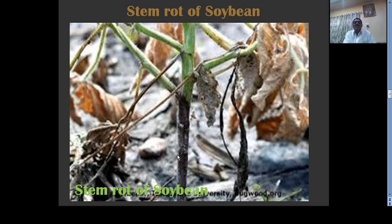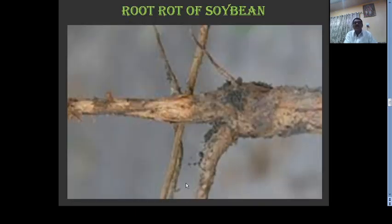This is stem rot of soybean due to the fungus Pythium. Stem rot is caused in the soybean plants, and the plant gets collapsed or toppled over on the ground. This is root rot of soybean caused by the Rhizoctonia species. So many fungi are responsible for root rot, but Rhizoctonia is always present. This shows complete damage of the root system caused by Rhizoctonia.